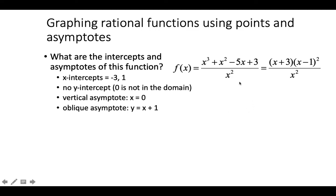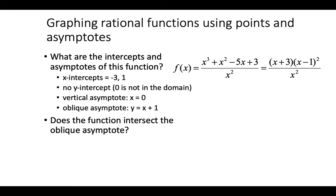To find the oblique asymptote, we perform long division: dividing x³ + x² − 5x + 3 by x², giving x² + 1 as the oblique asymptote. We must divide the original function, not the factored form, because the factored form contains the same terms with no cancellation — they are equivalent expressions, so we must still multiply back and divide by x².